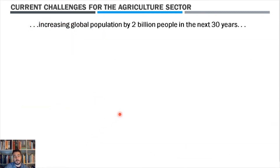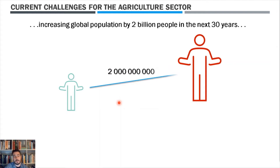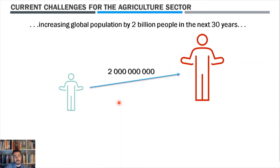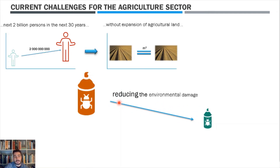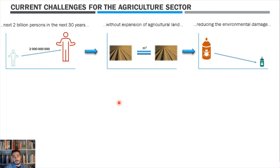Current challenges for the agriculture sector are food security to feed an increasing global population — we are talking about 2 billion more people in the next 30 years. This all, ideally, without expansion of agricultural land, while at the same time reducing environmental damage, mainly related to agrochemicals, and in this way preserving natural resources like soil and water for future generations. This fact comes from the OECD Global Forum on Agriculture 2019.